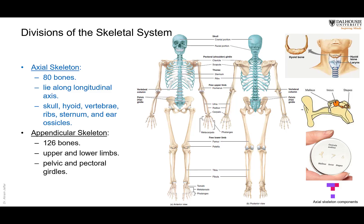The axial skeleton lies along the longitudinal axis of the body and includes the bones of the skull, the hyoid bone (u-shaped, present in the neck), the vertebrae, and the bones and cartilages of the thoracic cage — ribs, costal cartilages, and the sternum. These bones are colored in blue. The other part of the skeleton, called the appendicular skeleton, consists of the bones of the upper and lower limbs and their associated girdles.